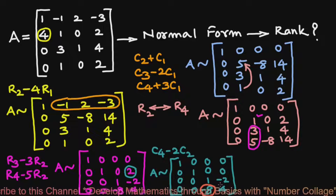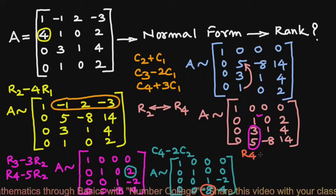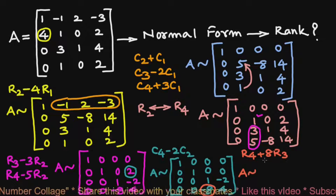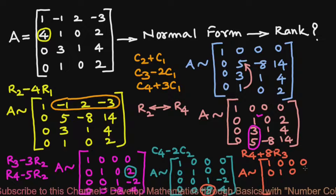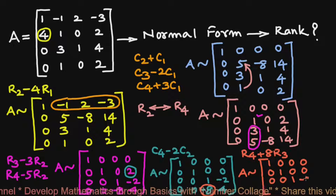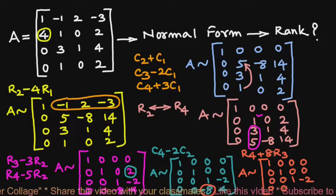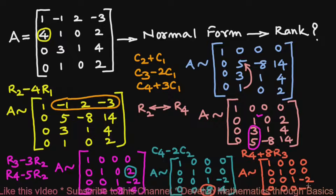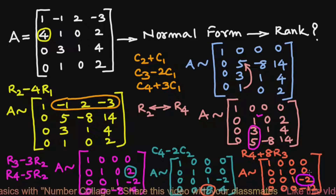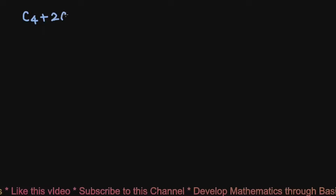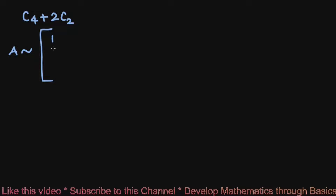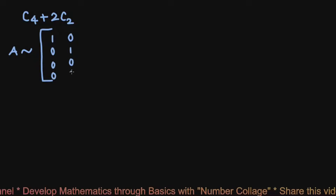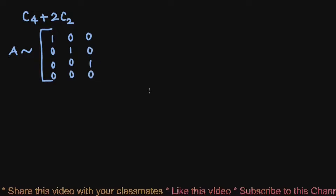Next, we make the -8 zero by row transformation R4 plus 8R3, giving the equivalent matrix: first three rows remain [1,0,0,0], [0,1,0,0], [0,0,1,-2], and row 4 becomes [0,0,0,-12]. Now we make the -2 zero by column transformation C4 plus 2C3. The equivalent matrix A becomes [1,0,0,0; 0,1,0,0; 0,0,1,0; 0,0,0,-12].